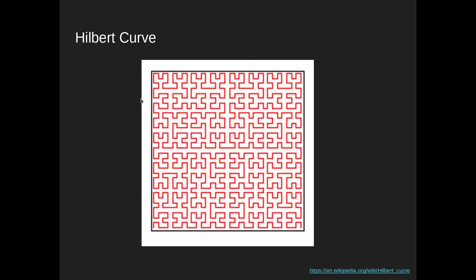SpatialPandas uses a Hilbert curve for sorting. A Hilbert curve fills a latitude-longitude region with a continuous curve starting in the bottom left and ending in the bottom right. We map our points onto this curve and define each point by the distance it lies along the curve. That converts latitude-longitude space into a single number — a distance along the curve — so points near each other on the Hilbert curve are also near each other in latitude-longitude space.